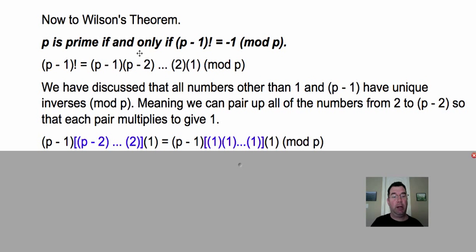So if I look at what I just wrote up here and I ignore the p - 1 and I ignore the one and I look at all the stuff in the middle from p - 2 to two, I'm going to put that in square brackets. But what I was saying is each number in here can be multiplied by another number in here to get one. So p - 1 is still p - 1. The one at the end is still one. But then all of these other numbers in the middle all can be paired up and multiplied to give one modulo p.